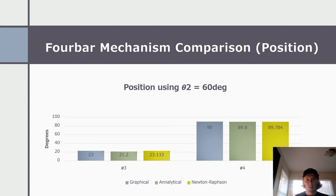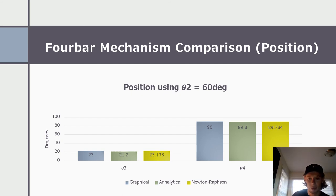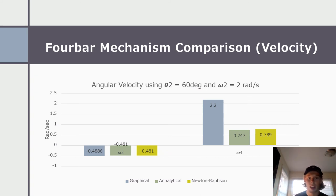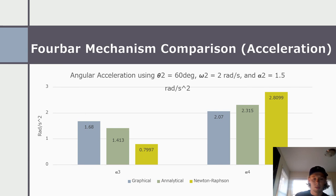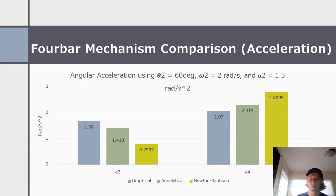Moving on to the comparison for position, comparing the graphical, analytical, and Newton-Raphson methods. Theta three all came out pretty close, right around 23 degrees, and theta four was pretty close to 90 degrees for all three methods. For the velocity comparison at theta two and W two equals 2 radians per second, results were pretty close — graphical was the only one a little off for W four. For acceleration at theta two equals 60, W two equals 2, and alpha two equals 1.5 radians per second squared, results were close with a little variation between Newton-Raphson and the graphical method.